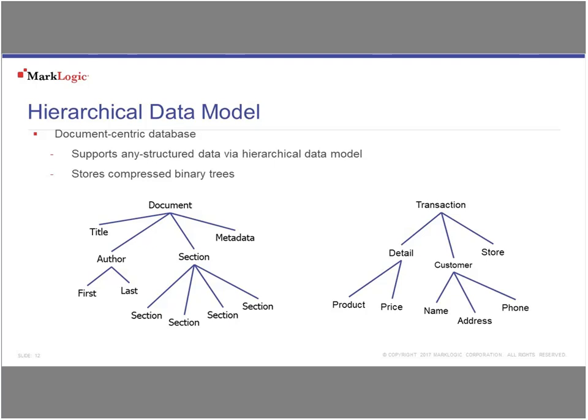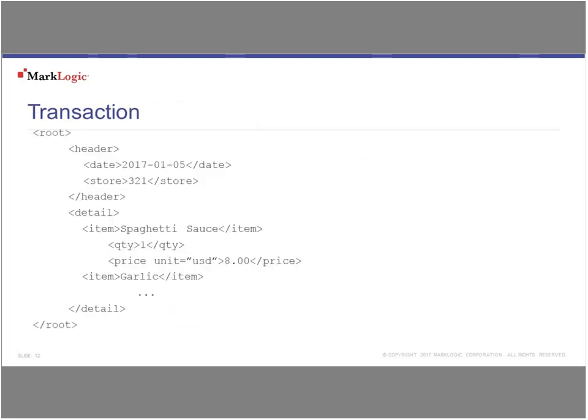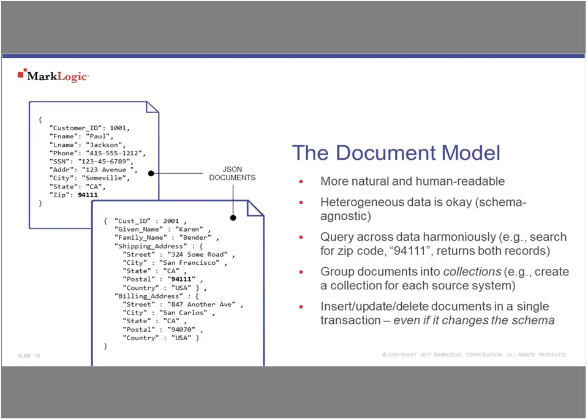If you look at a document — this happens to be an XML document — I can store all of that data in a single XML document. I've got my header section and my detail section. The nice thing is that I can have variable-length records — every record can look fundamentally different than the one before it, which is a limitation in relational databases where every record has to look essentially the same. This is especially important when we start talking about disparate data — data that's similar but not the same.